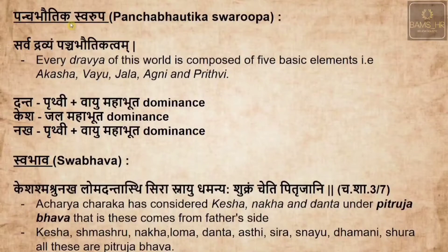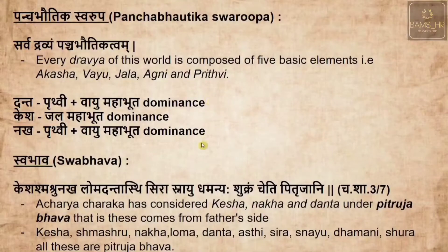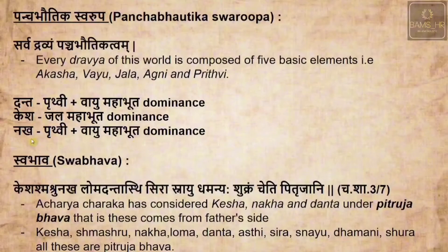When we come to the Panchabhautika Swarupa, as we know Sarvadhrava is Panchabhautika — every substance in this universe is composed of five basic elements: Akasha, Vayu, Jala, Agni and Prithvi. In this context, Danta is composed of Prithvi and Vayu Mahabhauta dominants; Kesha is Jala Mahabhauta dominant; and Nakha is Prithvi and Vayu Mahabhauta dominant. Danta and Nakha are one and the same in composition, but Kesha is Jala Mahabhauta dominant — this is to be remembered.